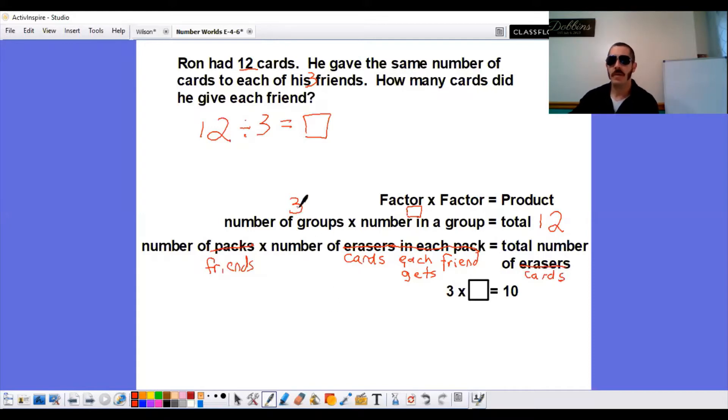So we know that three is one of our factors. It's the number of groups. We do not know the number in a group, but we do know the total, which is not 10 anymore, but 12. So three times what number equals 12, we know that to be four. So the answer will be four cards. Each friend gets four cards. Notice I put my label with my answer because it was a word problem. If I would just say four, that's not enough information. I need to have a label if it's a word problem.